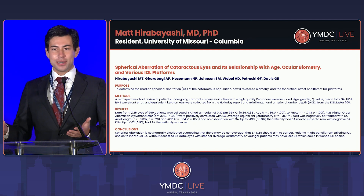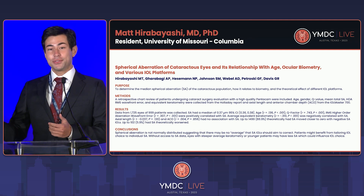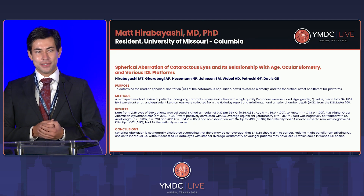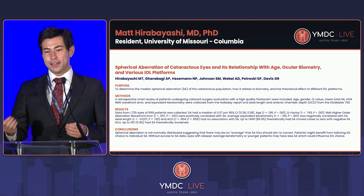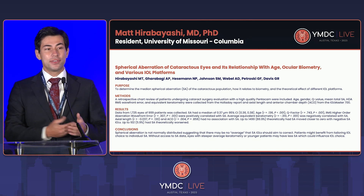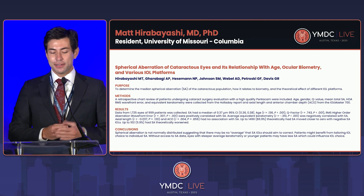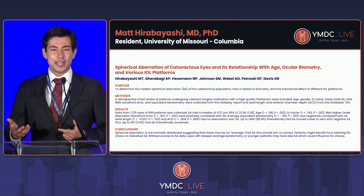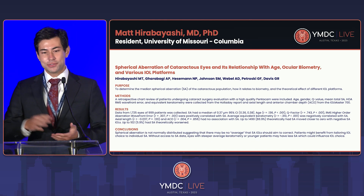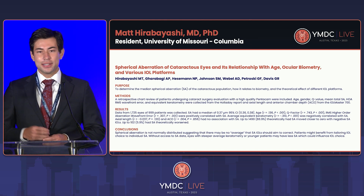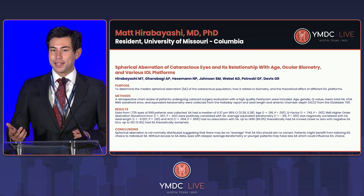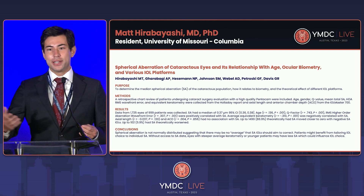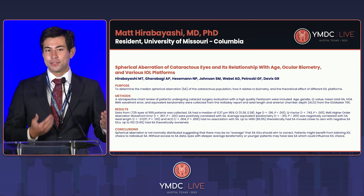For those that don't know, spherical aberration describes the phenomenon where peripheral rays enter a spherical lens at a greater angle of incidence than the central rays, so they experience a greater refractive effect. The consequence is that their focal point falls anterior to the principal focal plane of the central rays. The human cornea is subject to this effect, and even though it compensates by having a prolate shape — where the central cornea is a few diopters steeper than the peripheral cornea — the most commonly cited value for spherical aberration of the human cornea is +0.27 microns, meaning peripheral rays are focusing 0.27 microns anterior to the central rays.